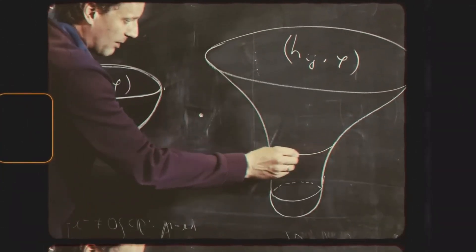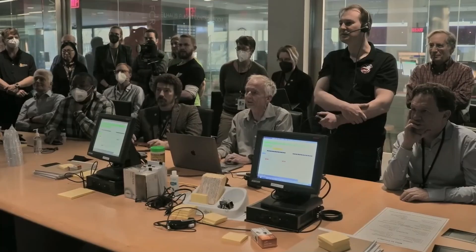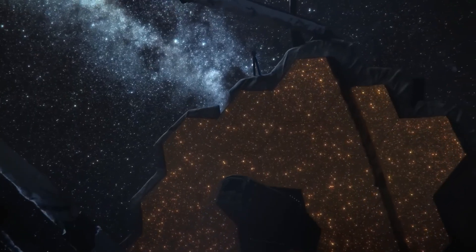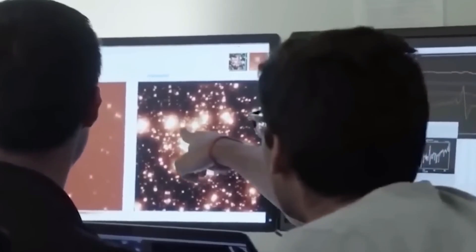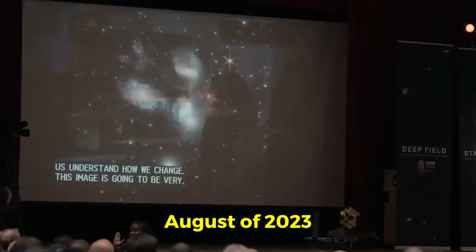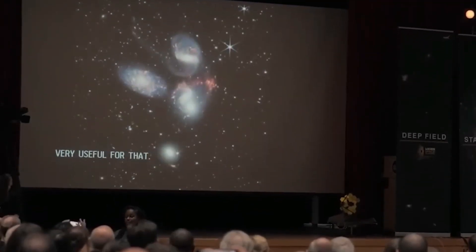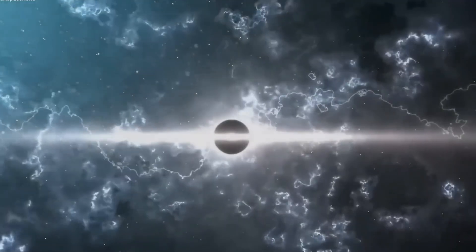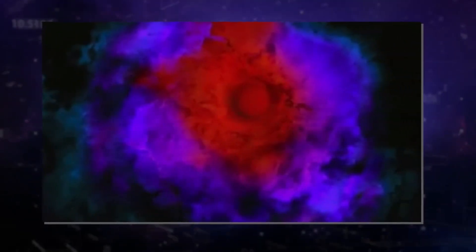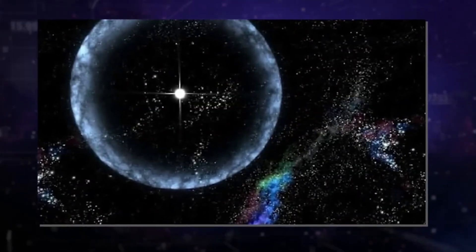Dark stars. The JWST isn't only finding ancient galaxies, it's finding new and wondrous things every day. Scientists are astonished at the wild discoveries they're making through this device. One of these discoveries occurred in August of 2023. During this period, scientists believe they found something called dark stars. Dark stars were first theorized in 2007, and scientists are not even sure these stars actually exist.